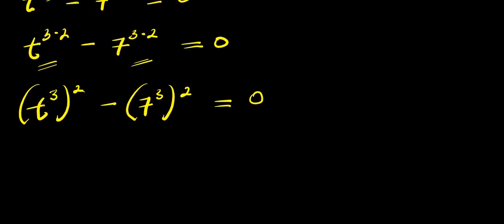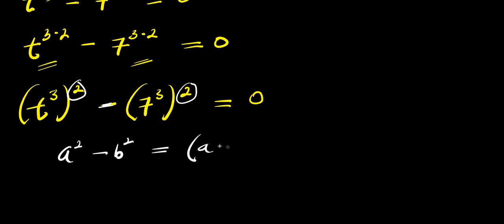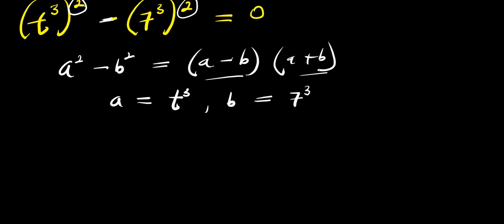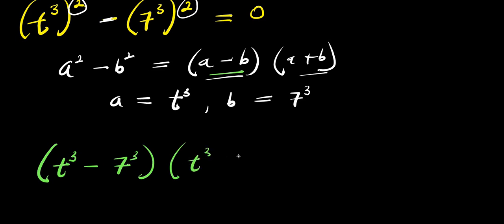From here we can use the difference of two squares, because both terms are raised to the power of 2 and we have a subtraction sign. The difference of two squares states that a squared minus b squared equals a minus b times a plus b. In this case, our a equals t to the power of 3, and b equals 7 to the power of 3. So we get t to the power of 3 minus 7 to the power of 3, times t to the power of 3 plus 7 to the power of 3, and this equals 0.